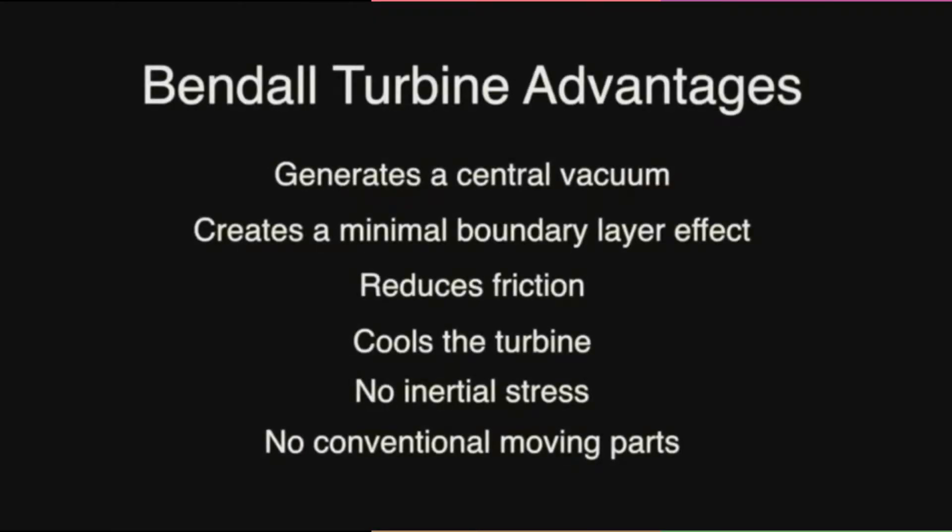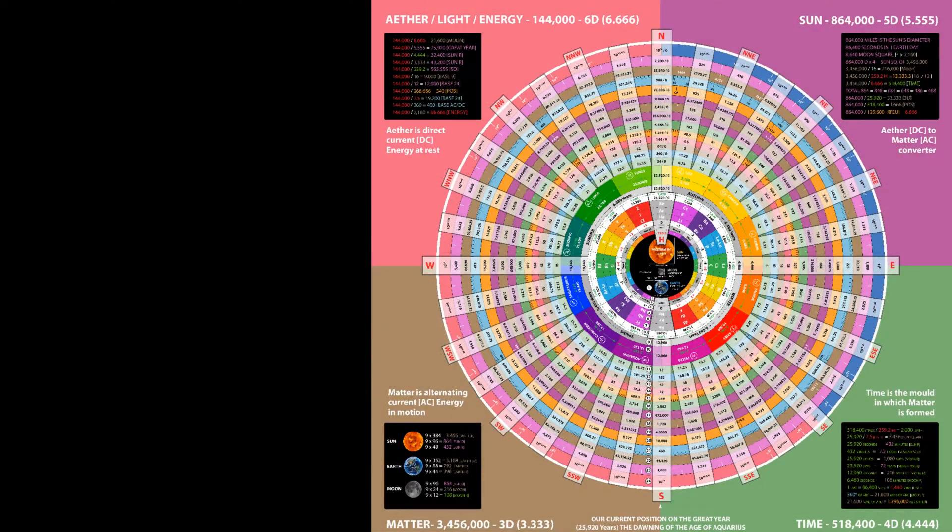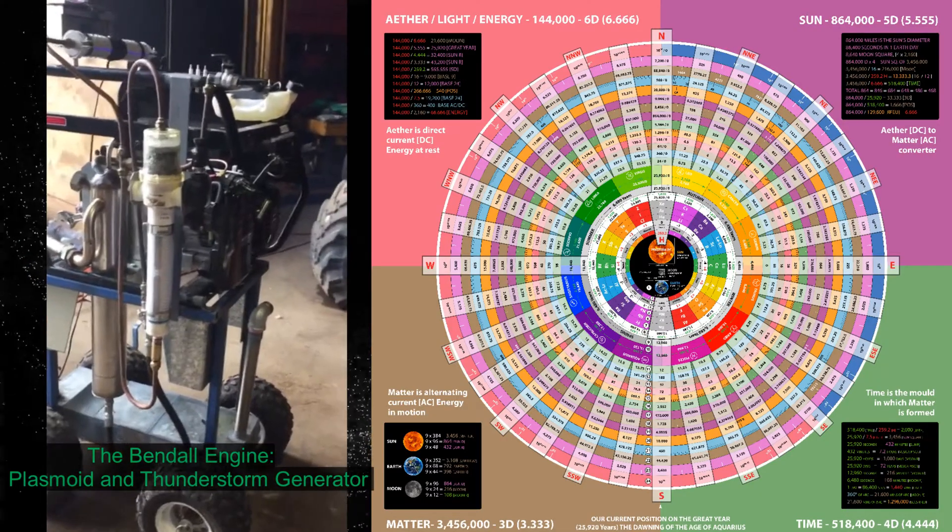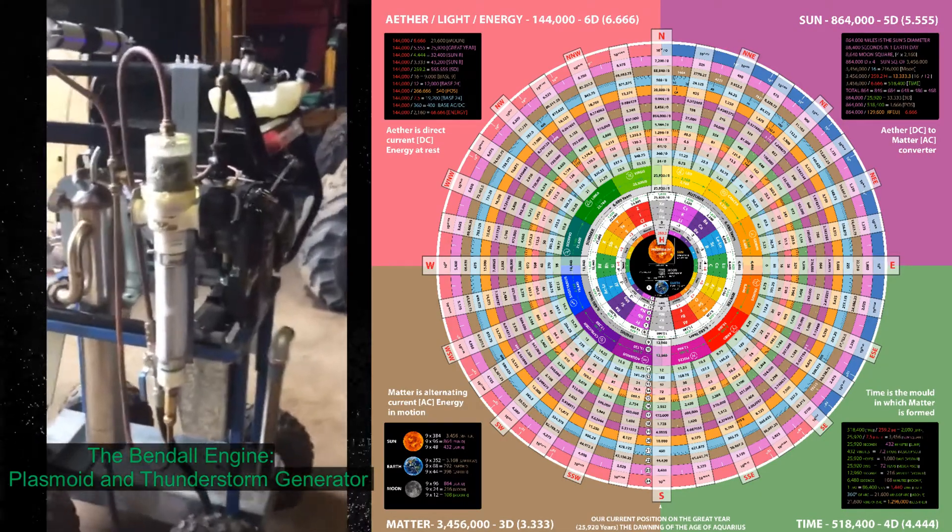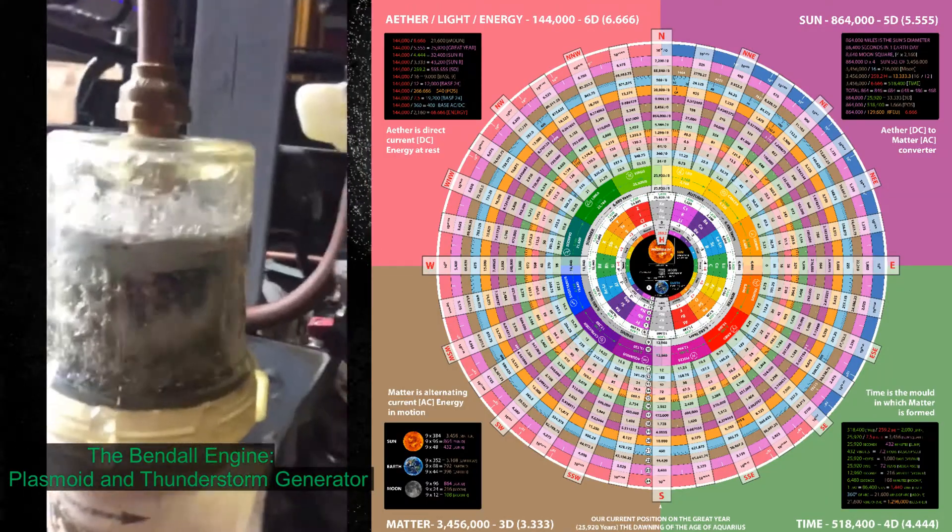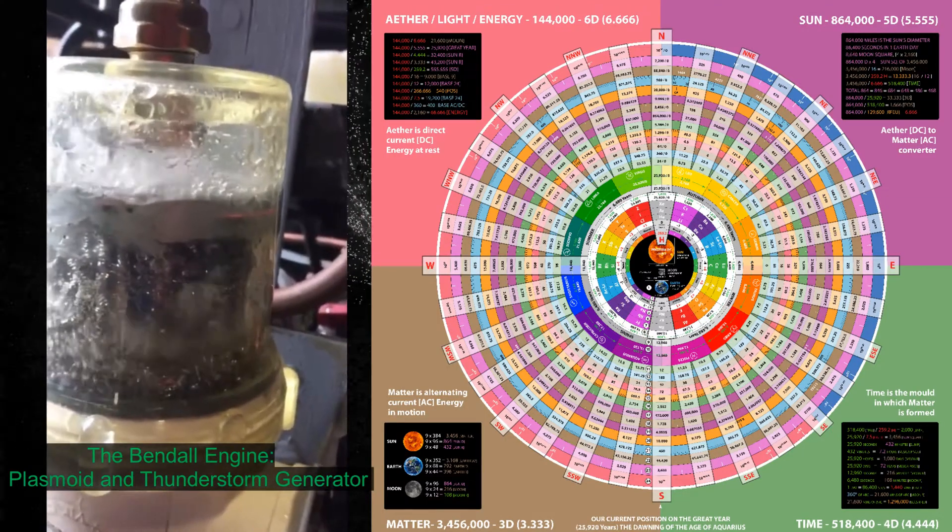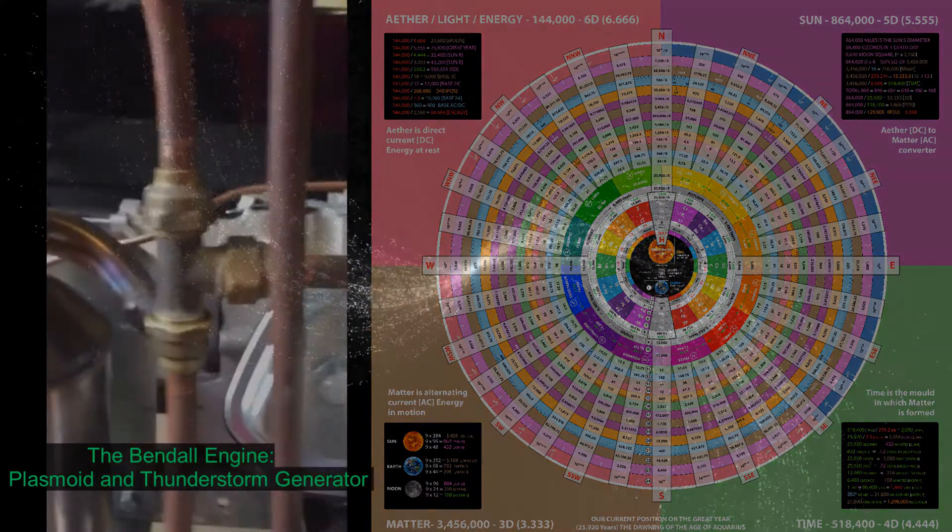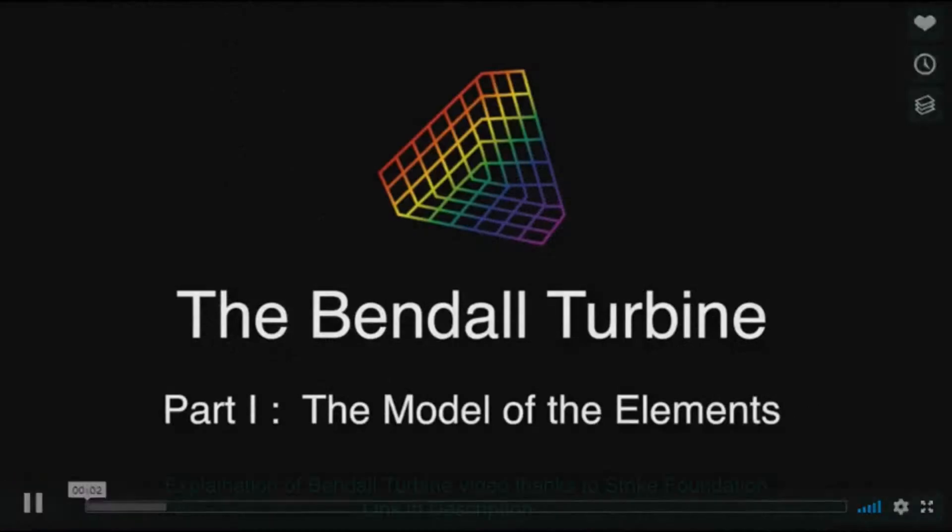This unified theory of matter and existence has been applied to practical technology. Recently, Malcolm Bendel has developed what is called the plasmoid thunderstorm generator. It is called this because Malcolm brilliantly designs the engine to replicate how nature utilizes opposing hot and cold counter-rotating forces within a containment to reproduce a thunderstorm in a bottle.